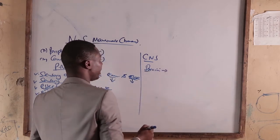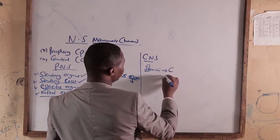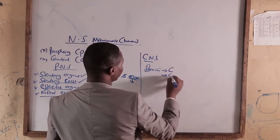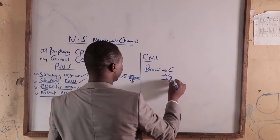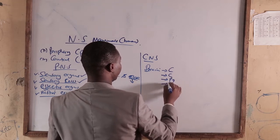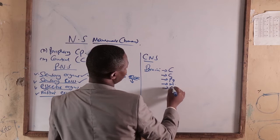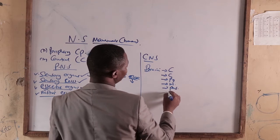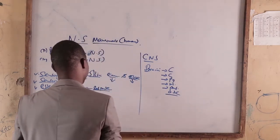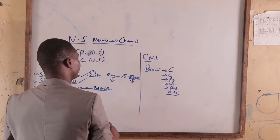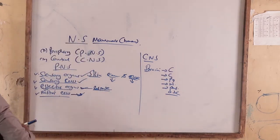The brain comprises of the cerebrum, cerebellum, pituitary glands, medulla oblongata, pons, and many other parts. We are going to look at the CNS, that is the central nervous system, later.